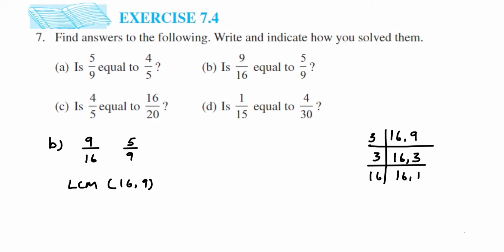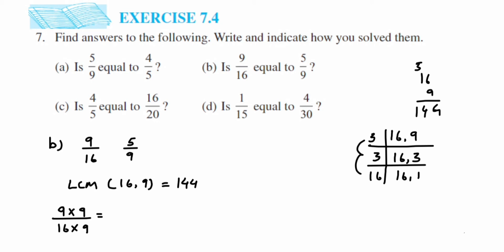Taking 3 as a factor: 3 ones are 3, but 16 doesn't fit neatly. The remaining factor gives us 9×16 = 144, so the LCM is 144. Now we change the denominators to 144. For the first number 9/16: multiply by 9 in numerator and denominator. So 9×9 is 81, giving 81/144.